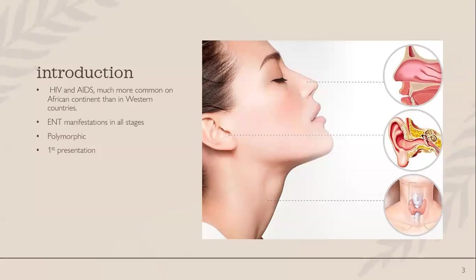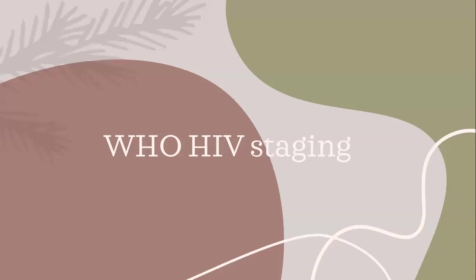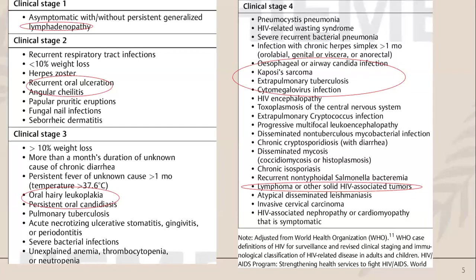ENT manifestations can present at all stages of the disease. More than half of HIV-infected patients present with ENT manifestations, and it's quite a polymorphic presentation, often being the first presentation to the consultation room. Looking at the WHO staging: generalized adenopathy in clinical stage one; recurrent oral ulceration and angular cheilitis in stage two; oral hairy leukoplakia and persistent oral candidiasis in stage three; and in stage four, esophageal or airway candida infection, Kaposi's sarcoma, extra-pulmonary tuberculosis, CMV, and lymphoma or other solid HIV tumors.